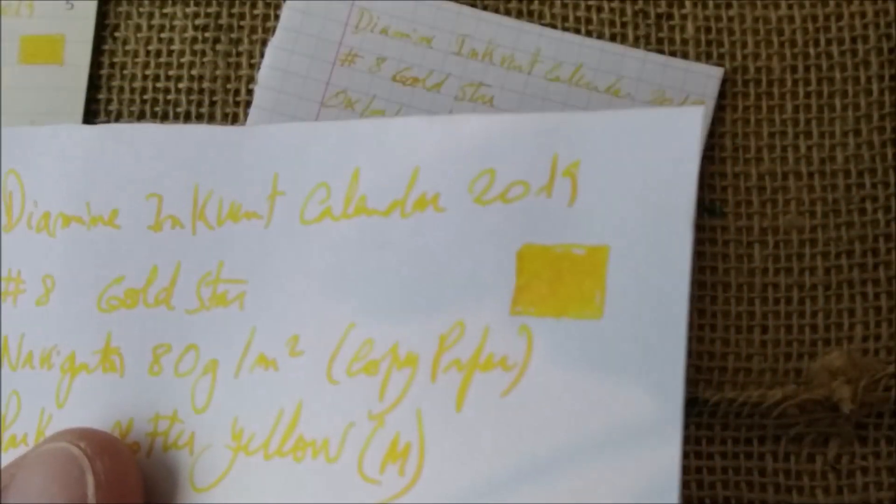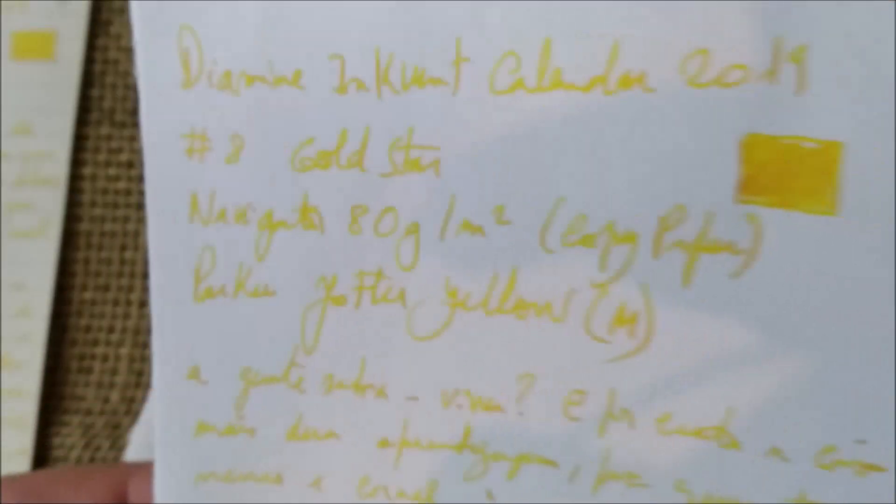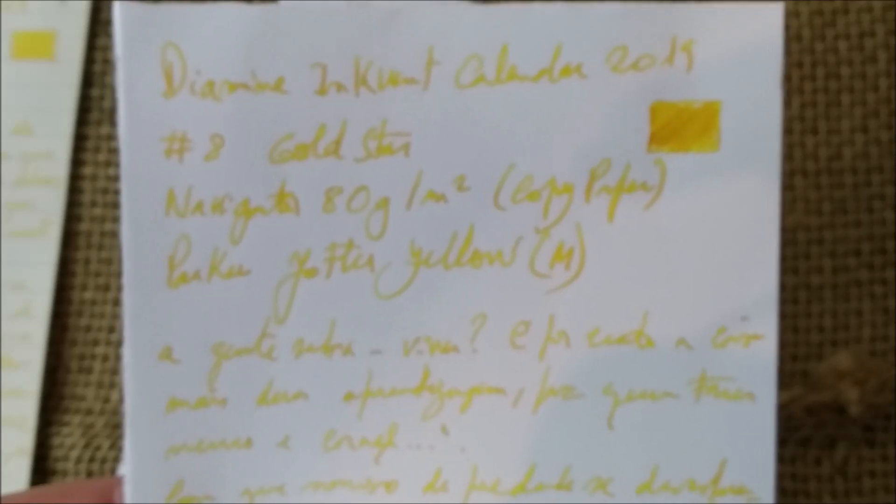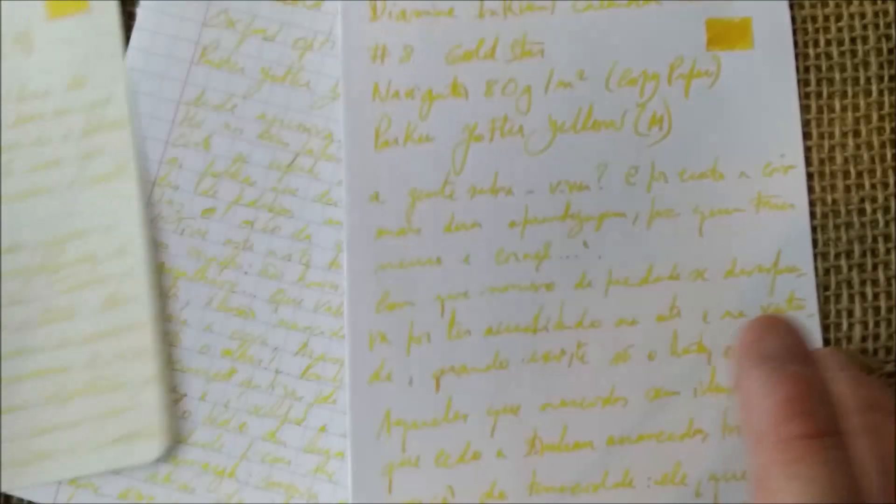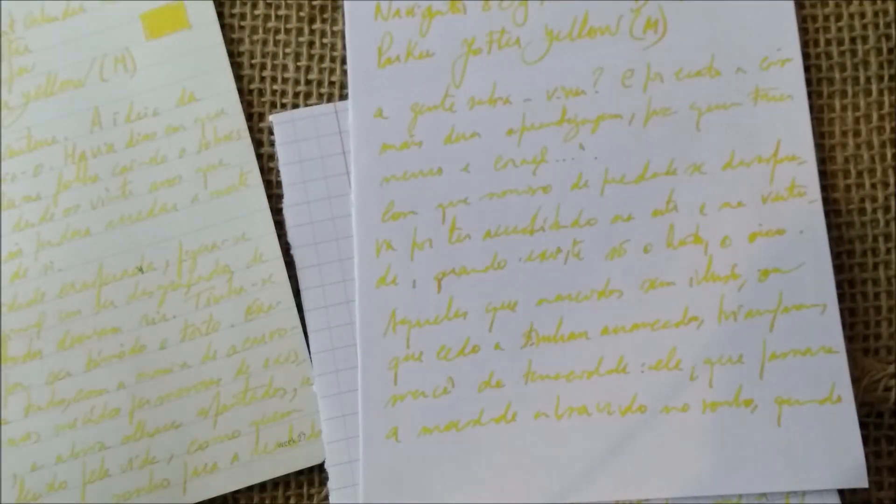And then we have here the Navigator copy paper. I think this is much easier to see everything. Maybe also because this M-nib looks much broader on this paper than on the other two. It's more absorbent, more ink goes onto the paper and into the fibers, so you can see more the glitter and the color. But in all of those, the ink is very well behaved. There's no feathering or bleeding through.